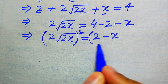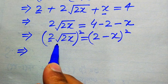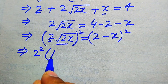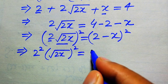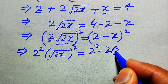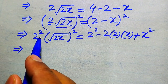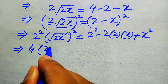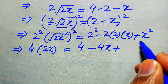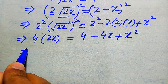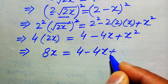Now we need to again take squaring on both sides to eliminate this square root sign. Applying squaring separately on each term gives: 2 squared times square root of 2x whole squared equals (2 minus x)². Expanding the right-hand side using the algebraic formula gives: 2 squared, minus 2 times 2 times x, plus x squared. Simplifying: 4 times 2x becomes 8x, equals 4 minus 4x plus x squared.